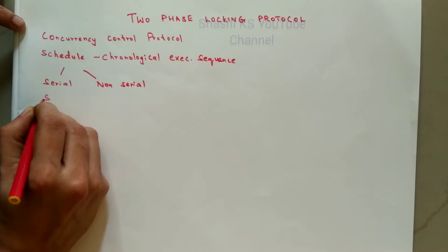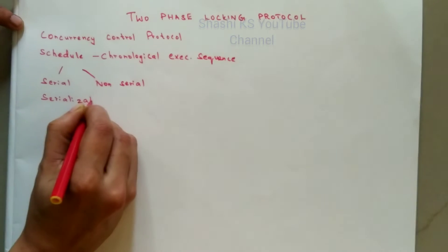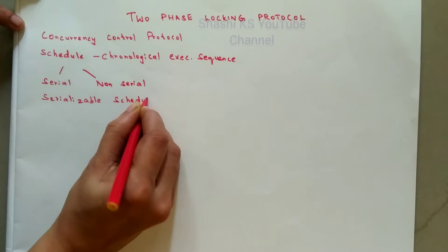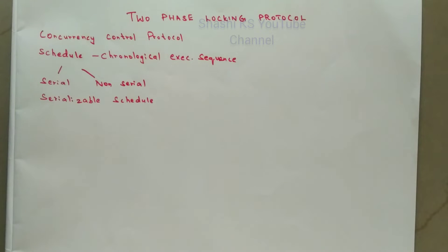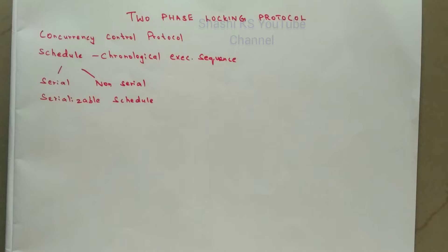We also have a concept called as serializable schedule. A schedule is said to be a serializable schedule if it is equivalent to some serial schedule of the same N transactions. If you are able to prove that your particular schedule is equivalent to some serial schedule of the same N transactions, then that schedule is called a serializable schedule. A serializable schedule only will leave the database in a consistent state. If a schedule is not serializable, there are chances it may leave the database in an inconsistent state.